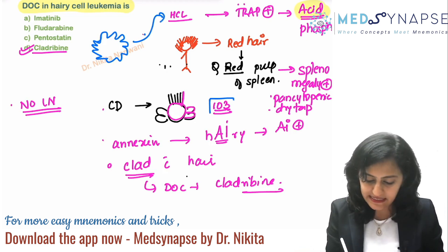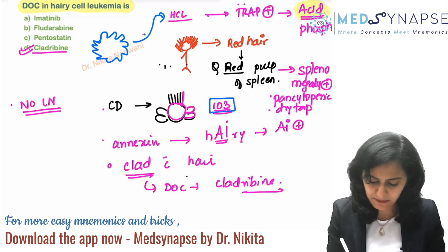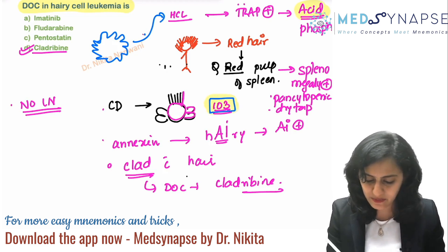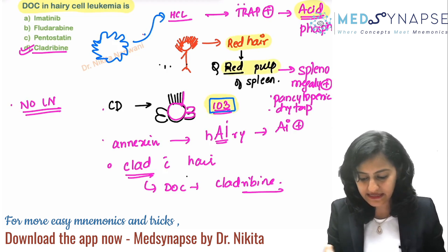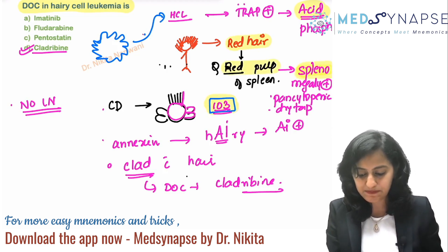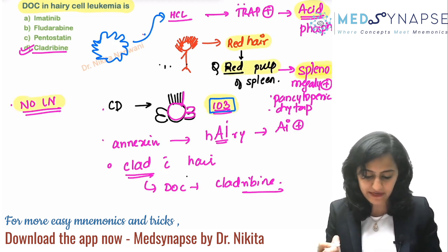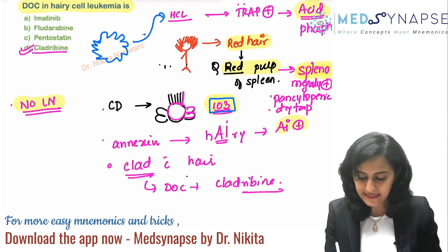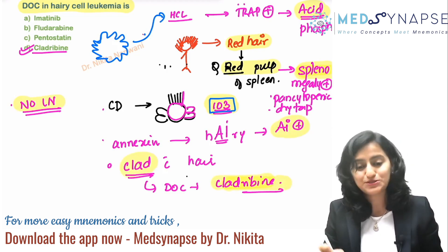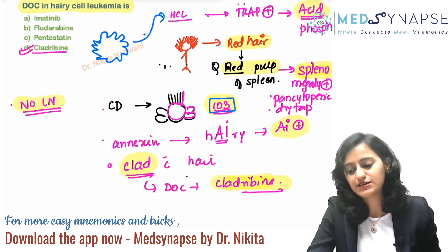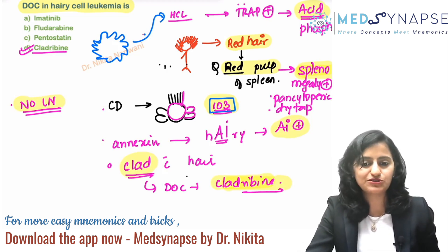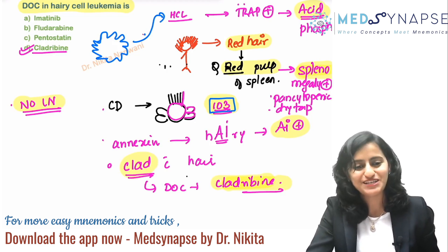Remember: CD103 is the important CD marker. It is red hair affecting the red pulp, so there is splenomegaly but no lymphadenopathy. It is annexin A1 positive. The person is clad with hair, so the drug of choice is cladribine. Also remember there is a BRAF mutation here, so drugs acting on the BRAF mutation are also used.